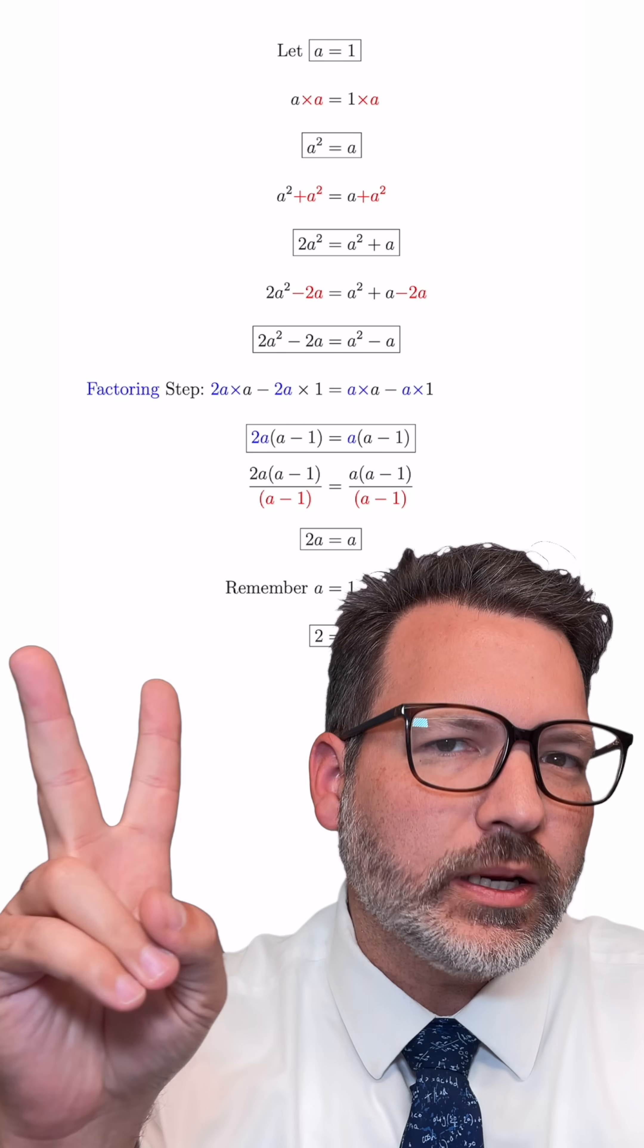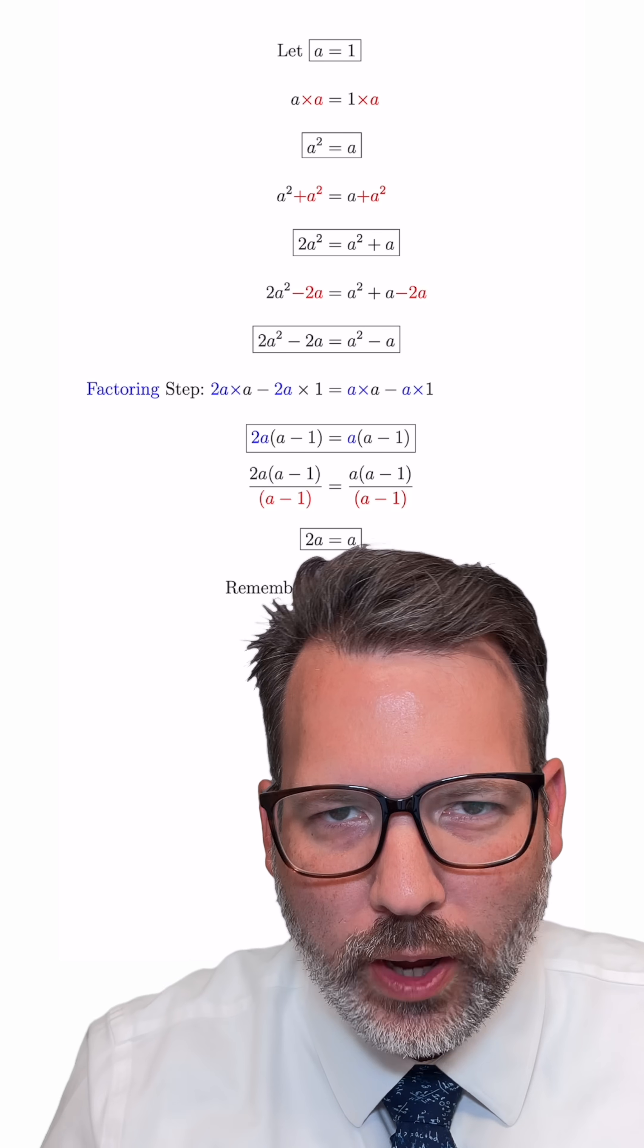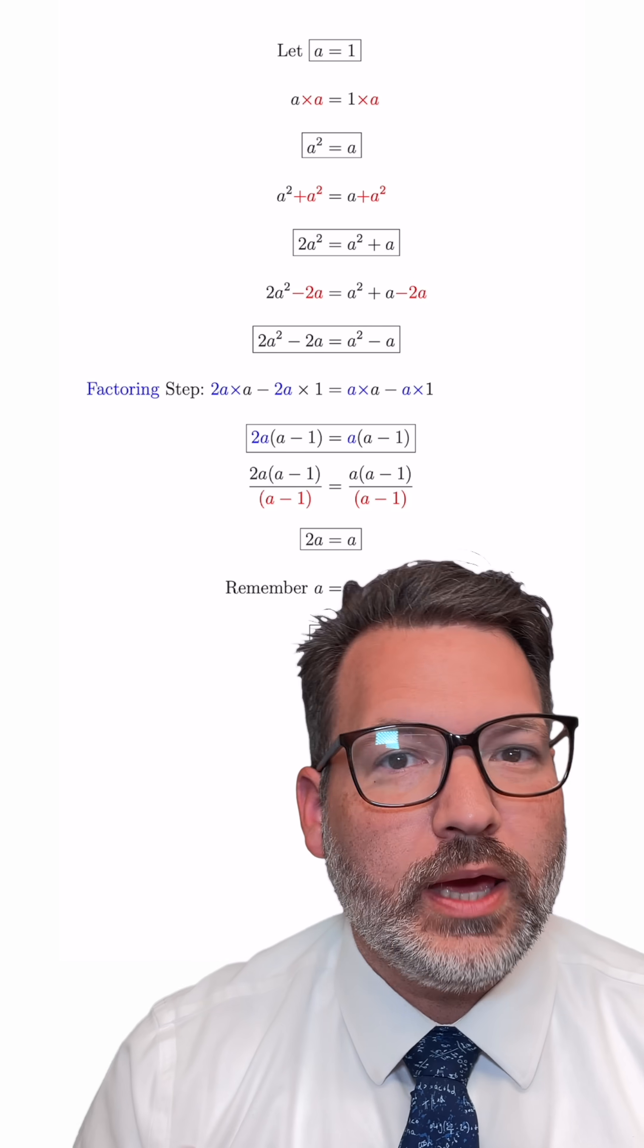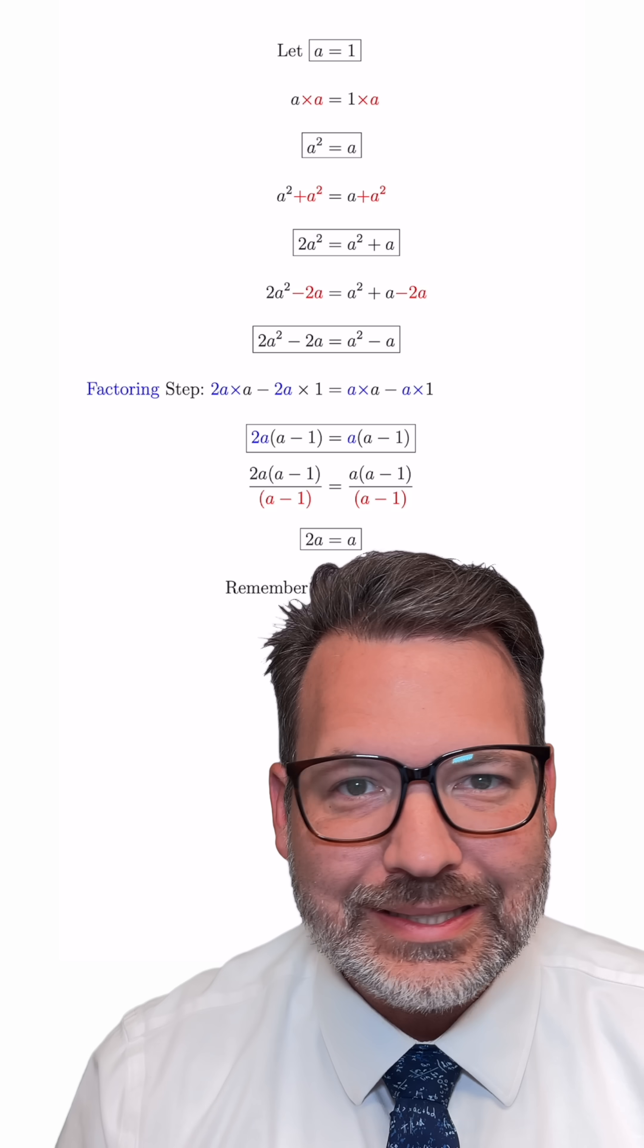What you're looking at here is the classic proof that two equals one. It uses only elementary algebra, and I call it a proof because obviously you can't prove that two equals one since it doesn't.